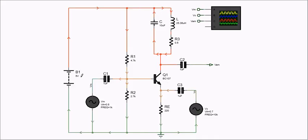A 5 volt DC supply, labeled B1, powers the circuit, with capacitors C and C2, and an inductor L, providing power rail filtering.